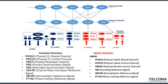CSI-RS measurements can also be used for beam management and to identify a particular beam — it stands for Channel State Information Reference Signal. The downlink control channel has DMRS and PDCCH for control signaling, PDSCH for normal packet data (similar to LTE), and PTRS, which is basically phase tracking reference signaling for downlink synchronization.